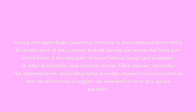Sphenoid. Having a wedged shape. Anatomy: relating to the compound bone which forms the base of the cranium, behind the eye and below the front part of the brain. It has two pairs of broad lateral wings and a number of other projections, and contains two air-filled sinuses.